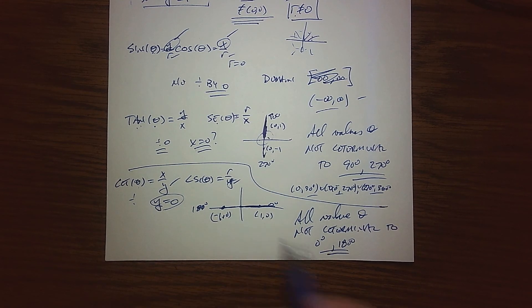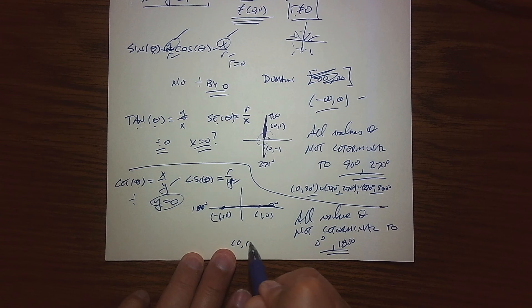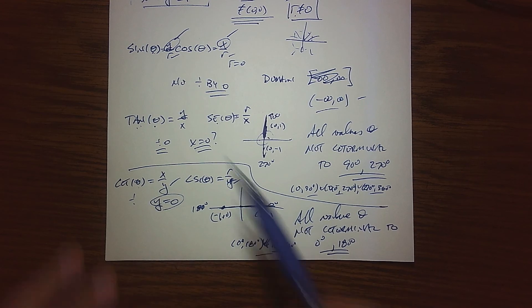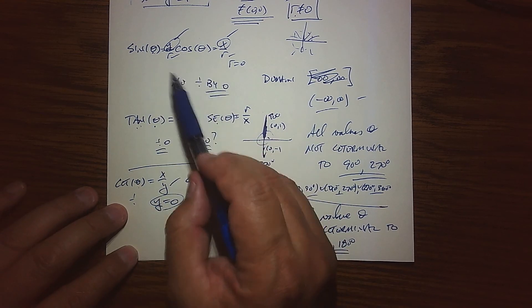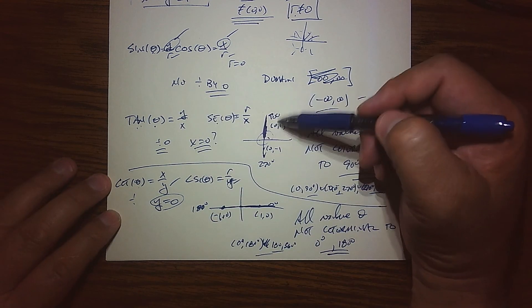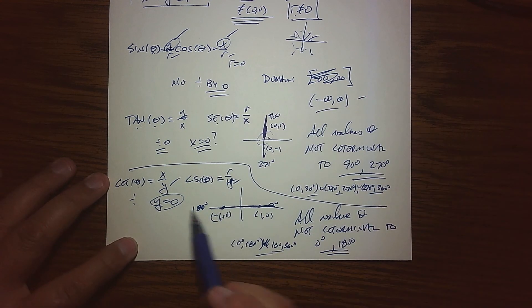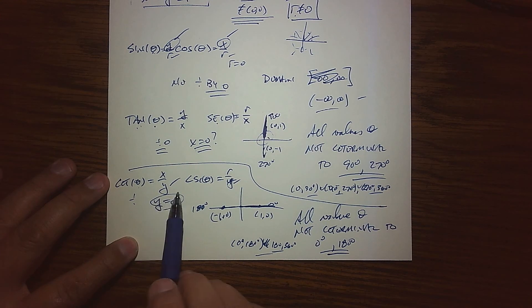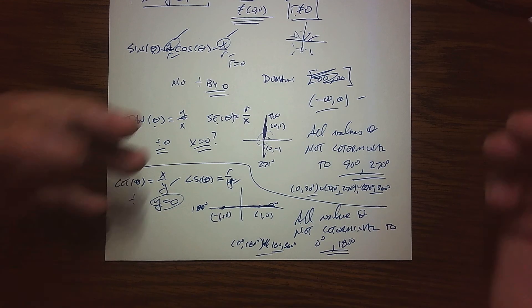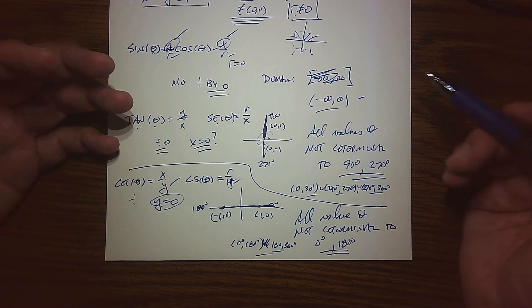So the domain, the way I can describe it right now, is all values theta not co-terminal to zero degrees and 180 degrees. And of course we can write that in interval notation in the first rotation - zero to 180 union 180 to 360, if you wanted to say it that way. So that's basically domain. Sine and cosine, very strong functions - you can put whatever you want in them. Tangent and secant, relatively weak - everybody works except things co-terminal to 90 and 270. And then cosecant and cotangent have problems at zero and 180, but everybody else works.